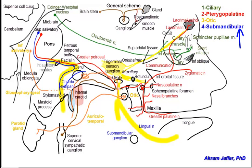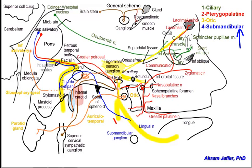The chorda tympani's name reflects its course: it leaves the facial nerve within the petrous temporal bone, passes toward the posterior part of the tympanic membrane, passes between the layers of the tympanic membrane medial to the handle of the malleus — one of the three ossicles of the middle ear — then re-enters bone at the front of the tympanic membrane and descends. It emerges from the base of the skull through the petrotympanic fissure, passes medial to the spine of the sphenoid bone, runs down on the medial pterygoid muscle, and joins the lingual nerve.